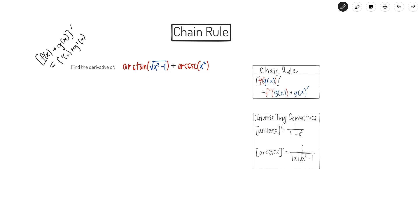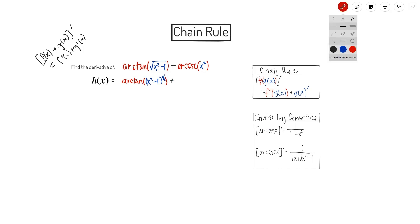Let's dive in. For this first part, I see that the outer function is arctangent and the inner function is the square root of x squared minus one. I'm going to rewrite this in a form that's a little bit more suitable — I'll write the square root of x squared minus one as the group x squared minus one all to the one half power. That makes it a little bit easier when I apply the power rule.